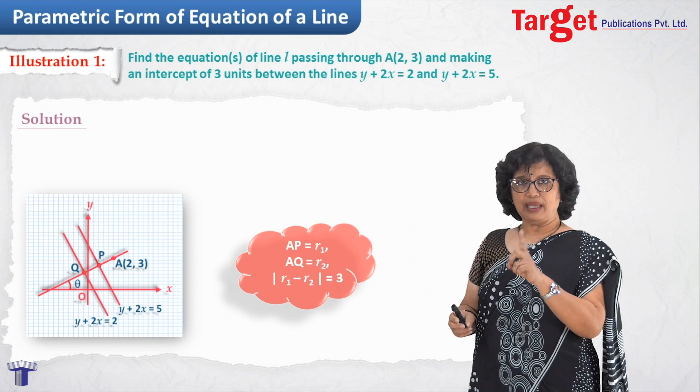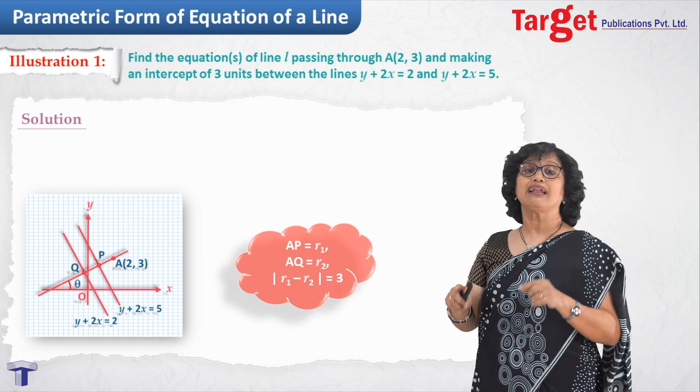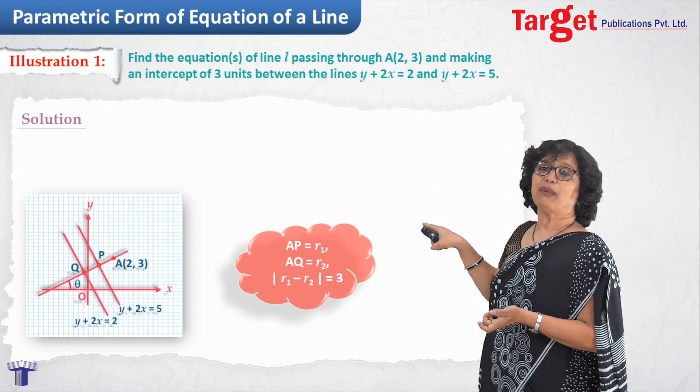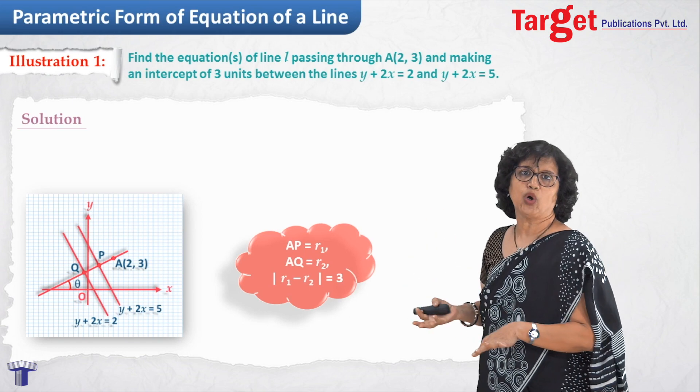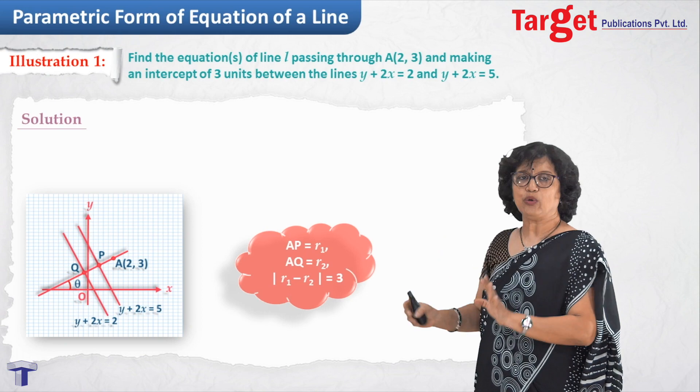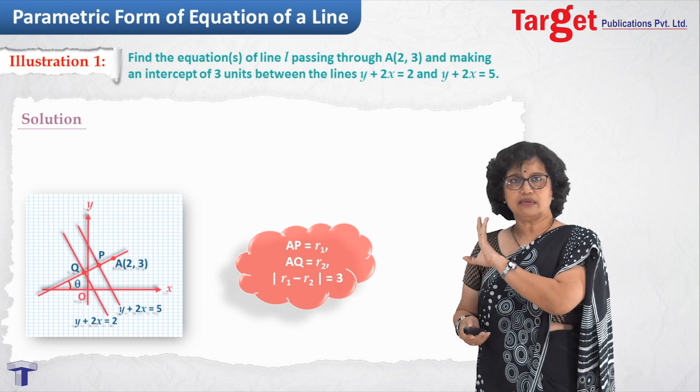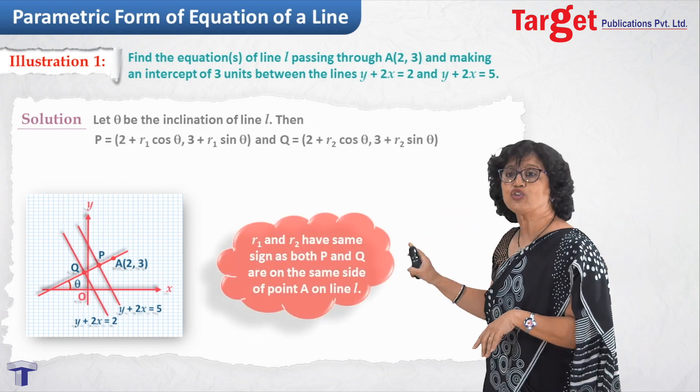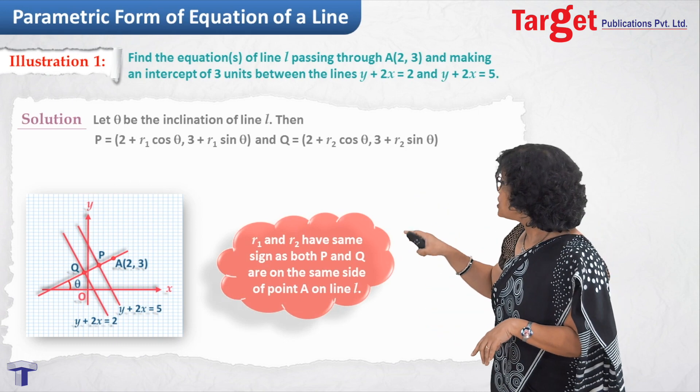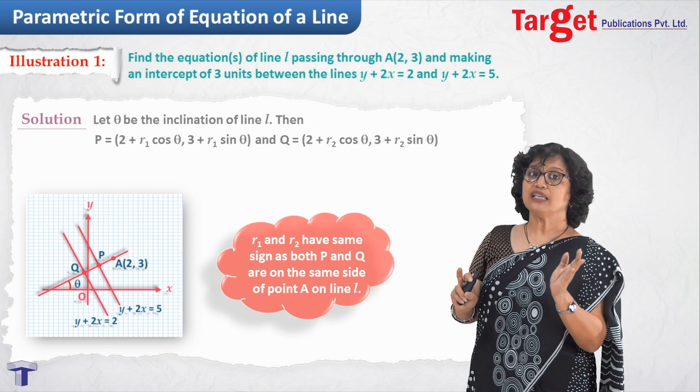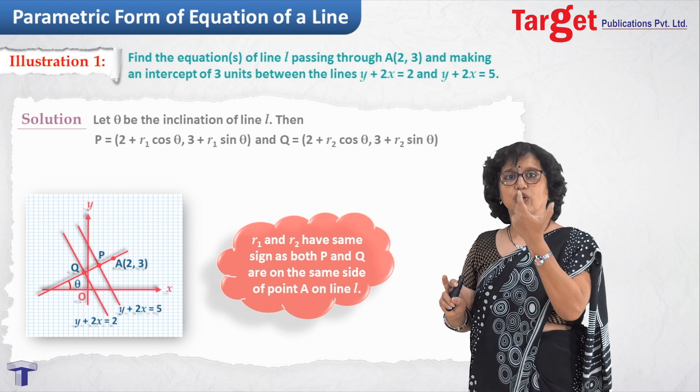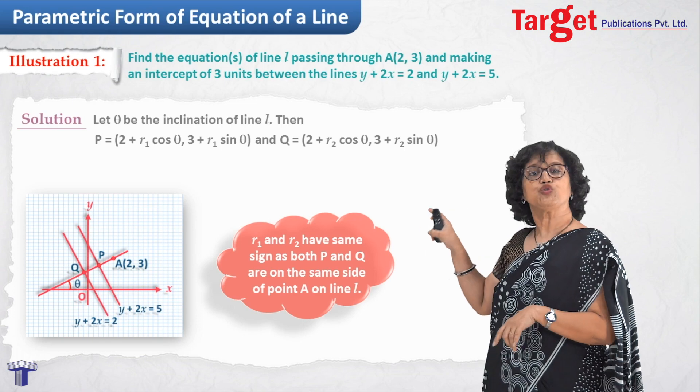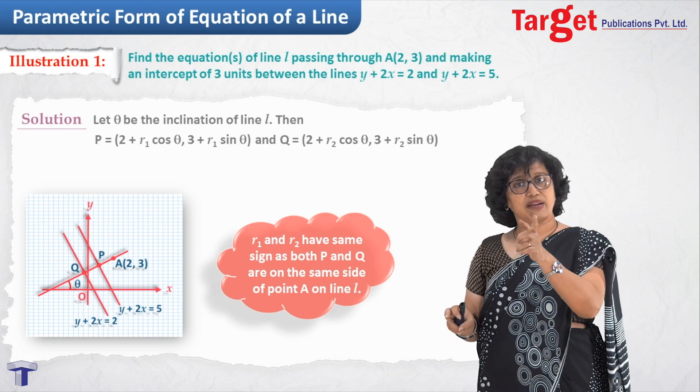So I am naming AP as r1 and AQ as r2. From the given statement that line has intercept between two parallel lines as three units, I write absolute value of r1 minus r2 equal to 3. Frankly speaking, right now I do not know which one is bigger, r1 is bigger or r2 is bigger. So I am writing absolute value. Absolute value of r1 minus r2 is 3. Now if theta is the inclination, what are other things I can write? I can write coordinates of point P as 2 plus r1 cos theta, comma, 3 plus r1 sin theta. How do I write that? x equal to x1 plus r cos theta. Because we had written x minus x1 equal to r cos theta. So x equal to x1 plus r cos theta. Use that and write x coordinate as 2 plus r1 cos theta, y coordinate as 3 plus r1 sin theta for P.